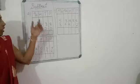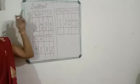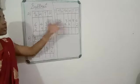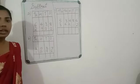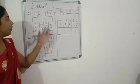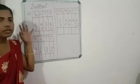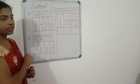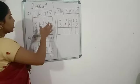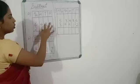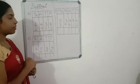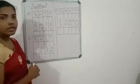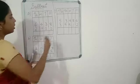Our next question is subtraction. Some numbers are arranged and given, and we have to subtract them. This is the first question — two four-digit numbers are given, and we have to subtract.